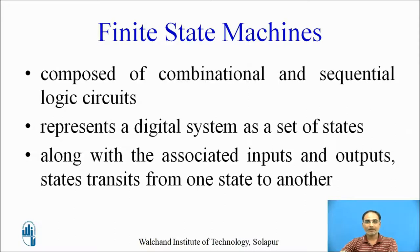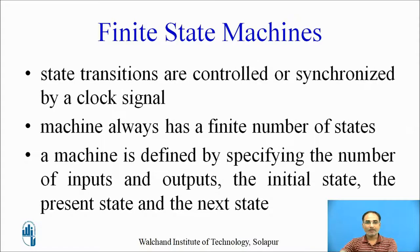So what are state machines? State machines are composed of some combinational and sequential logic circuits. State machines represent a digital system as a set of states. State machines are associated with some inputs and they give some outputs. The states transit from one state to another depending upon the input and the present state. A machine is defined by specifying the number of inputs and outputs, the initial state from where the state machine starts, and the present state and the next state because of the applied input.